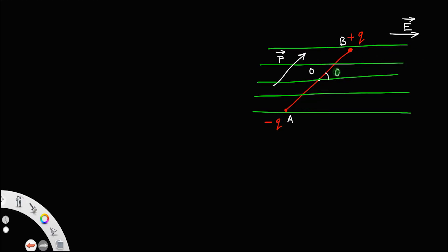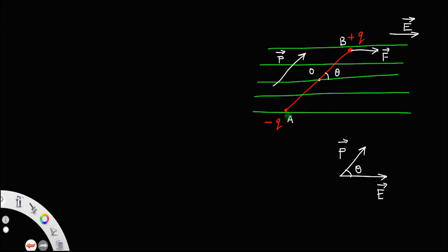Let this angle be theta — the angle between the dipole moment and the electric field is theta. In this electric field, there will be forces acting on these two charges. The force acting on the +q charge will be along the direction of the electric field, but for the negative charge it is opposite to the electric field. The magnitude of both forces will be qE, but they are in opposite directions.